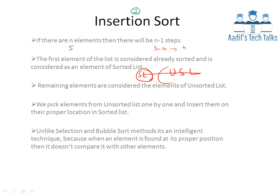What we have to do is to select an element from the unsorted list and compare it with the elements of the sorted list, and then insert the element from the unsorted list into the proper position of the sorted list. We pick elements from the unsorted list one by one and insert them at their proper location in the sorted list. Unlike selection and bubble sort, it is an intelligent technique because when an element is found at its proper position, it doesn't need to be compared with other elements.